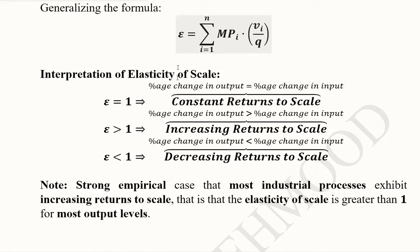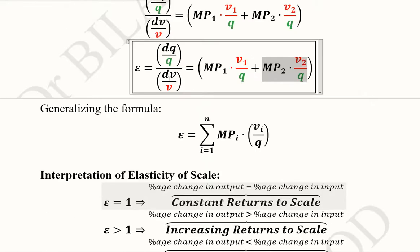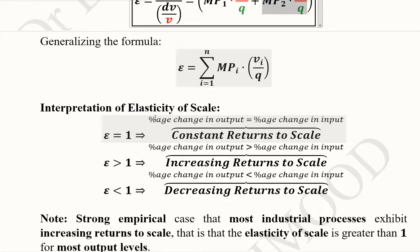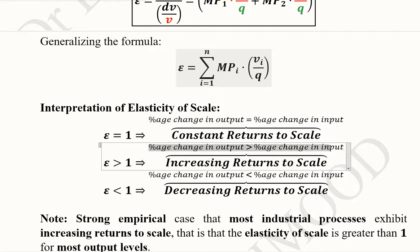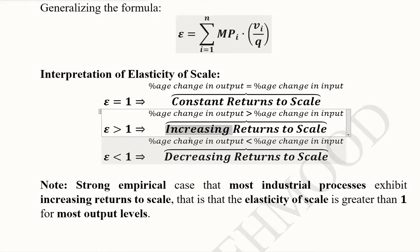The interpretation of the elasticity of scale: if it equals 1, we have constant returns to scale, meaning the proportionate change in inputs equals the proportionate change in output. If the percentage change in output is greater than the percentage change in input, the elasticity of scale is greater than 1 — the numerator exceeds the denominator — giving us increasing returns to scale. When the percentage change in output is less than the percentage change in input, the ratio is less than 1, indicating decreasing returns to scale.